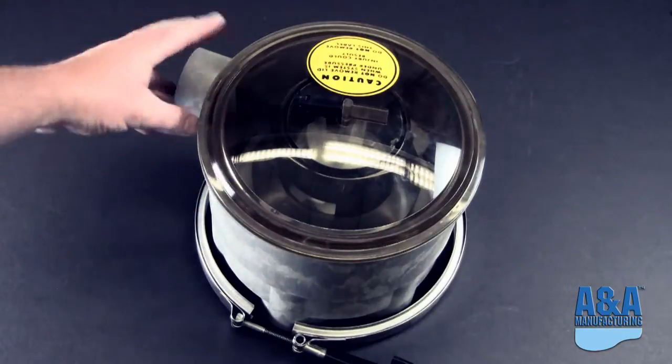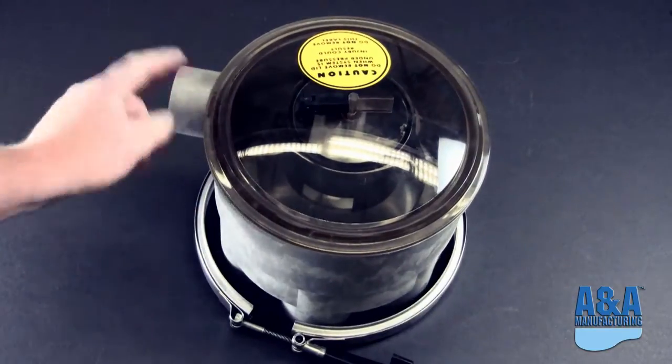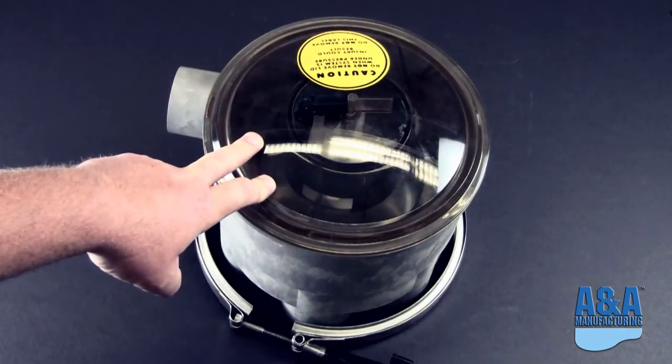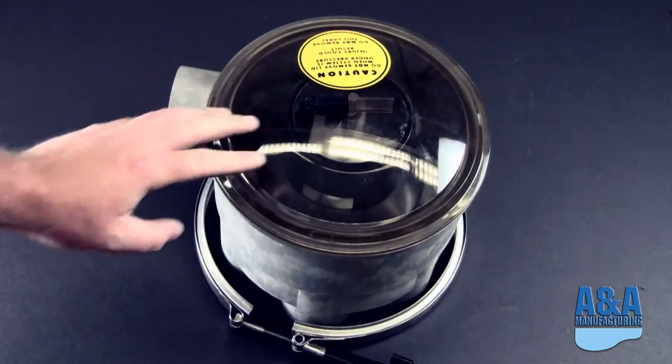So this valve is our low-profile valve. Once again, you can identify it by the side entry port for the water feed. This is our current valve that A&A produces, so this is what you're going to see on most new pools today.